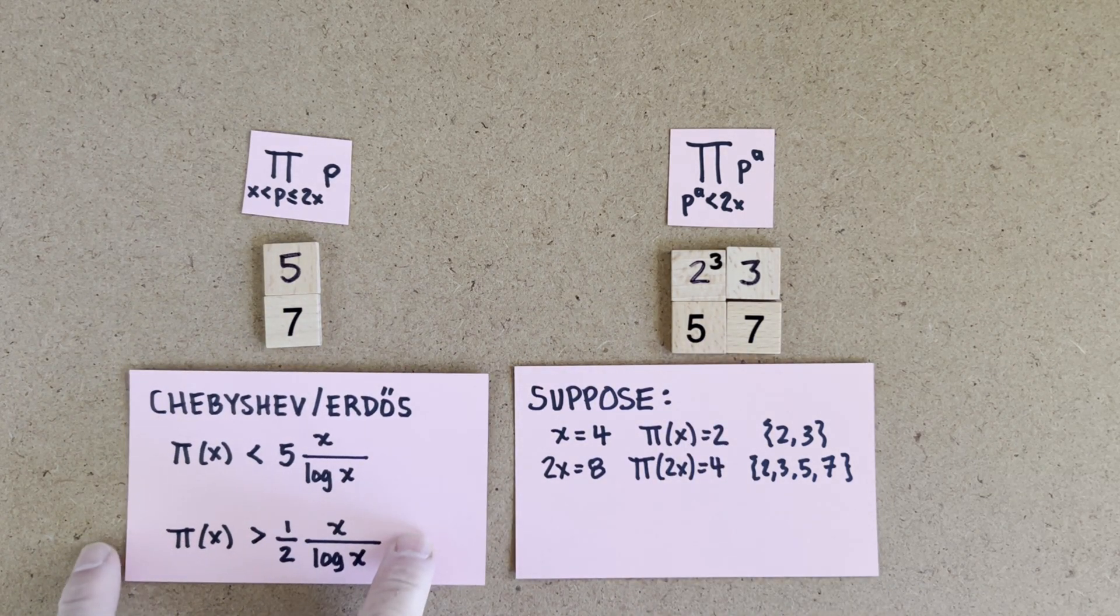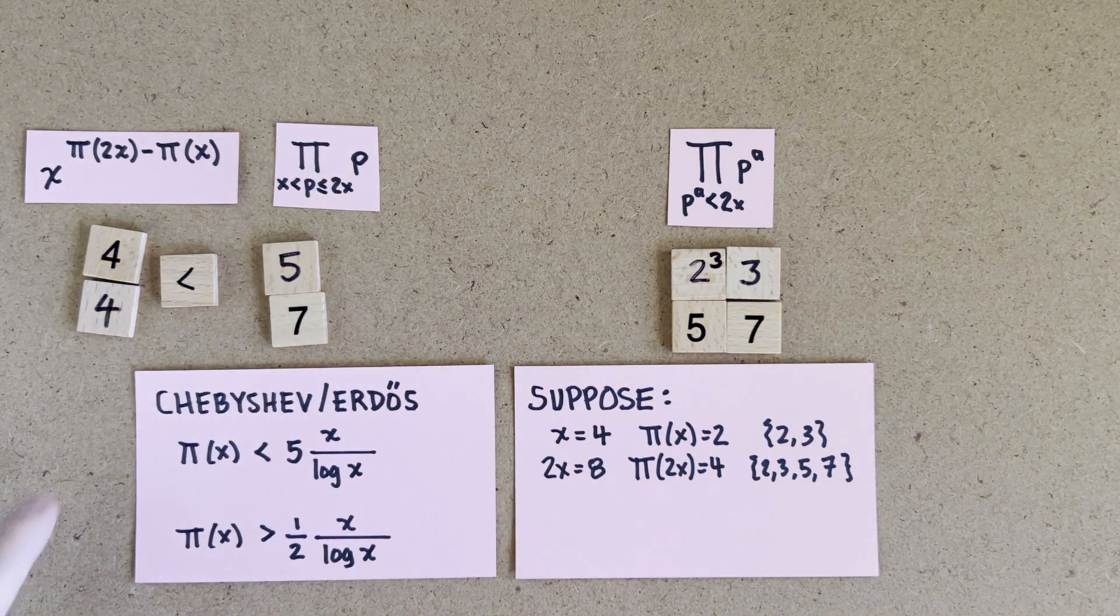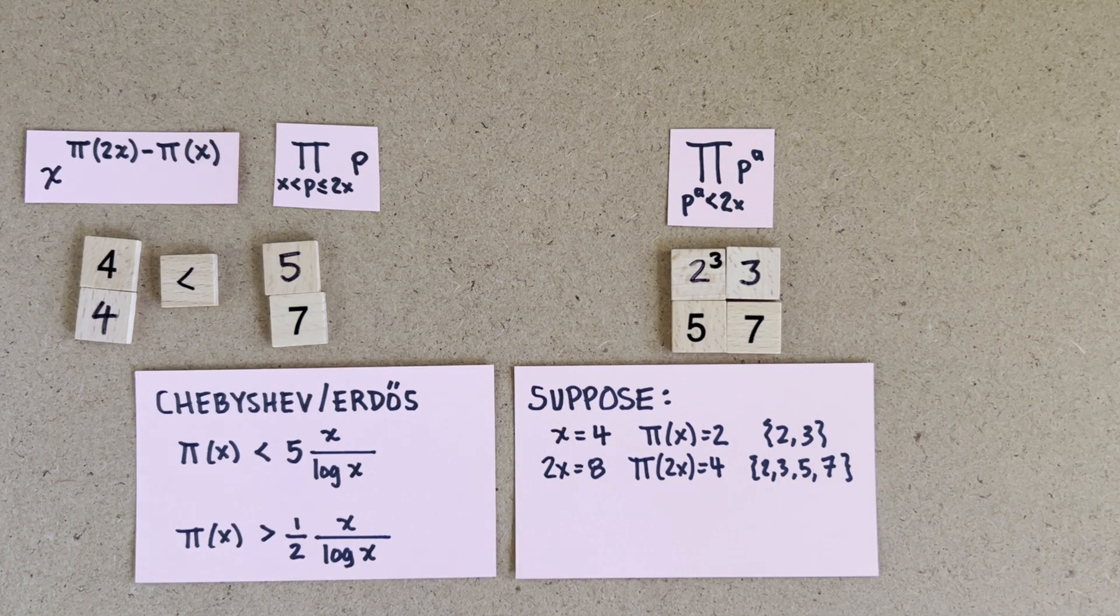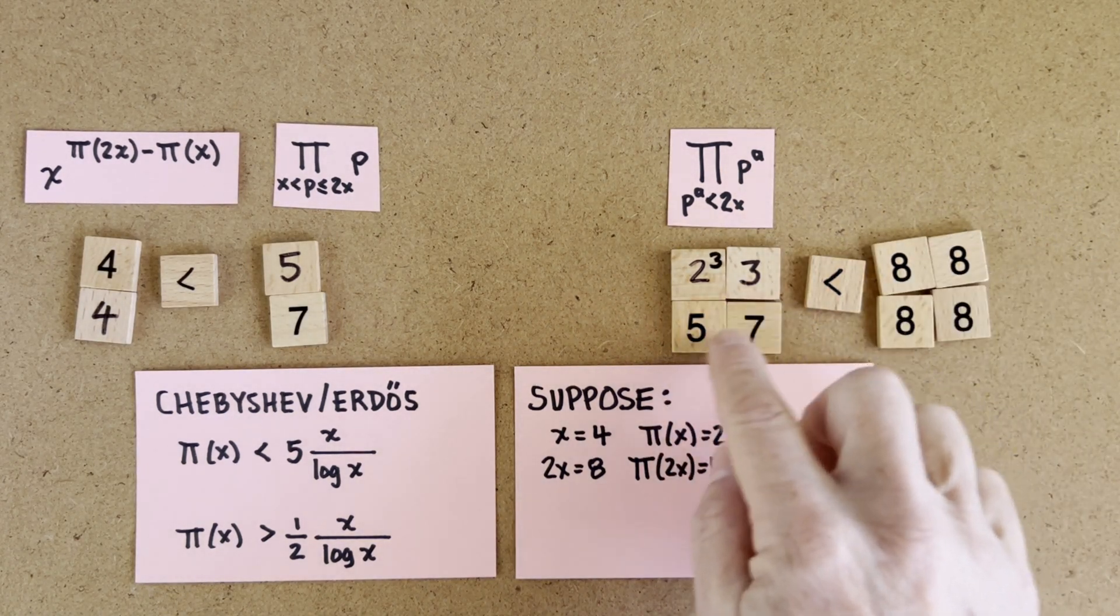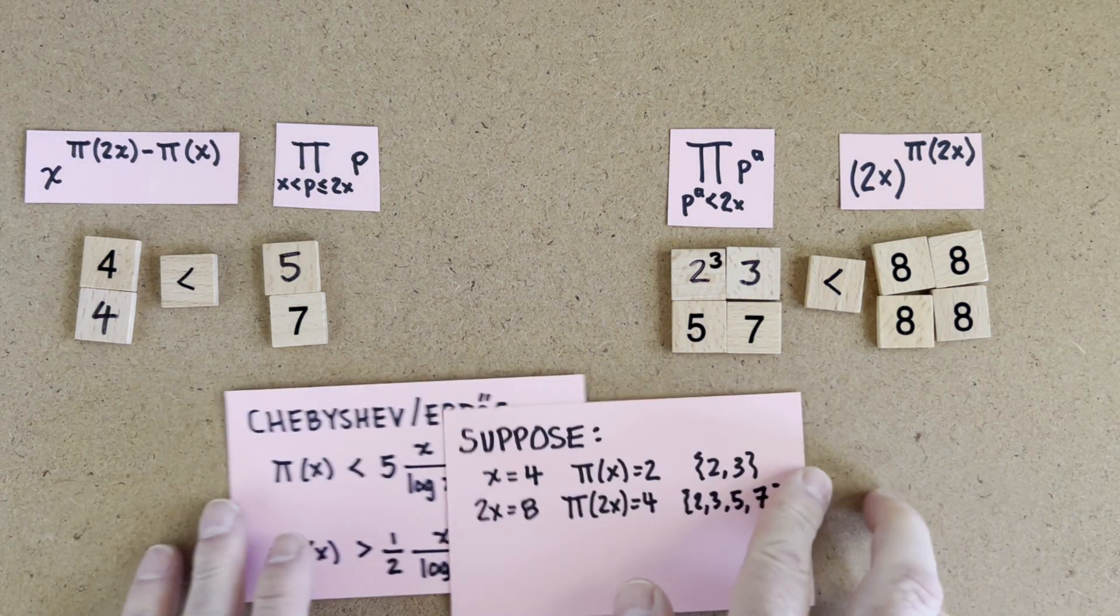So with these two special numbers, we can prove the bounds. And the proof doesn't care about what the numbers actually are, but I'm going to use the actual numbers here so we can see how it works. Each of these numbers here are bigger than x. So this product is bigger than x to the number of primes between x and 2x. And each of these numbers is smaller than 2x. So this product is smaller than 2x to the number of primes up to 2x.